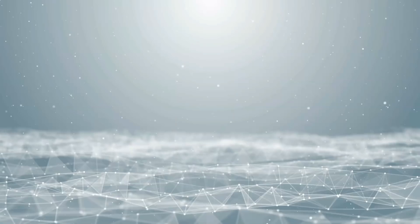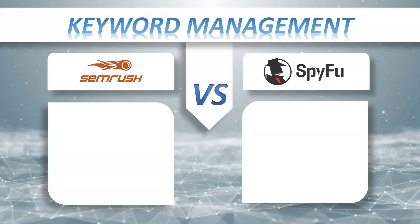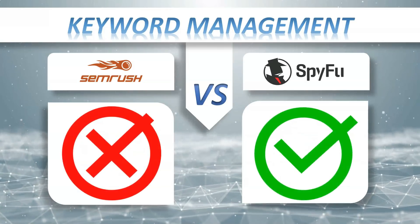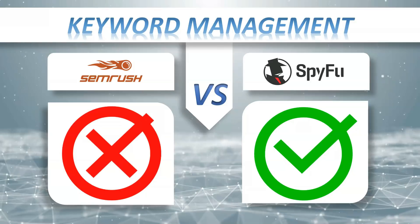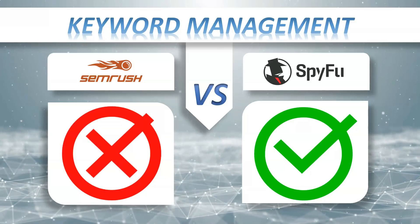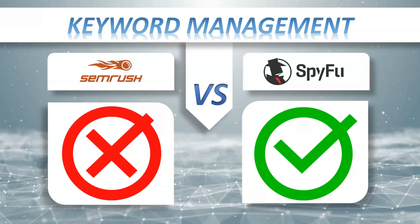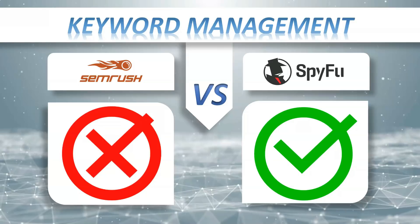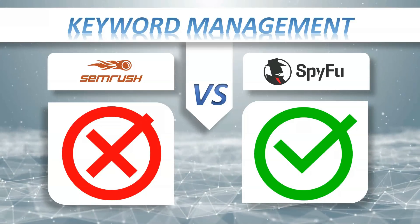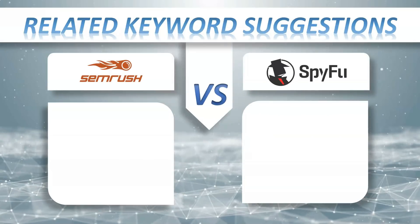Keyword management: SEMrush minus, SpyFu plus. Keyword management is an innovative and multi-faceted approach to discovering, analyzing, grouping, and organizing large numbers of keywords, with the objective of prioritizing, collaborating, and acting on keyword data to build and optimize your PPC or SEO search marketing campaign.